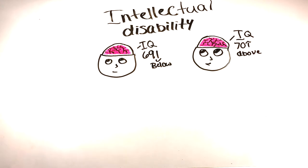A significant limitation in intellectual functioning is defined as an intelligence quotient of 69 or less.